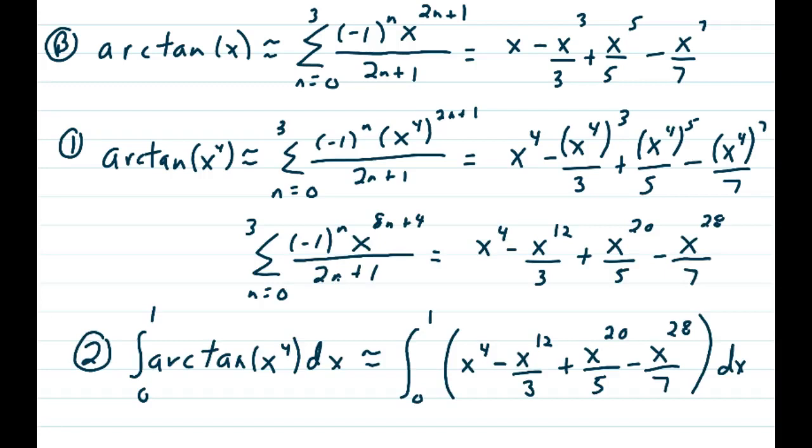Simplifying that a little bit, we have the summation n equals 0 to 3, negative 1 to the nth, and we distribute that 2n plus 1, and we get x being raised to the 8n plus 4 over 2n plus 1. And simplifying the polynomial: x to the 4th minus x to the 12th over 3 plus x to the 20th over 5 minus x to the 28th over 7.